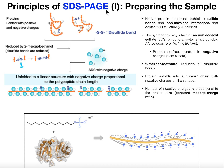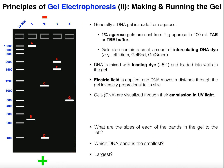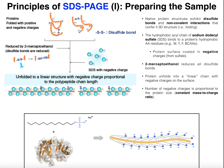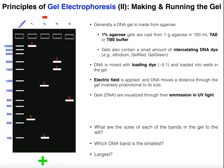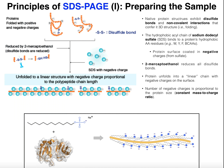SDS-PAGE is a method for separating proteins in a gel. Previously, we talked about separation of DNA molecules using an agarose gel. If we're separating proteins, we have to use a different kind of gel called an SDS-PAGE gel. SDS stands for sodium dodecyl sulfate — it helps denature the proteins. PAGE stands for polyacrylamide gel electrophoresis. Polyacrylamide is the matrix of the gel itself, whereas in DNA gels the matrix was agarose. Everything else is pretty much the same principle, except there's a little more complication with proteins.